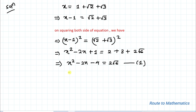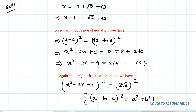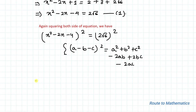In the next step, again squaring both sides of the equation, we have (x² minus 2x minus 4)² equals (2 root 6)². Here we apply the algebraic identity for (a minus b minus c)², which equals a² plus b² plus c² minus 2ab plus 2bc minus 2ac. Applying this identity gives us x⁴ plus 4x² plus 16 minus 4x³ plus 16x.